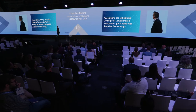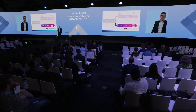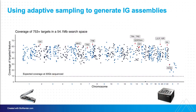Before that we have the non-B cells. With those non-B cells we're able to do some assembling of the Ig loci — a lot of cool work happening with the Oxford Nanopore genomic applications team. We extracted genomic DNA and did adaptive sampling. We have 753 targets, a 54-megabyte search space covering everything in the Ig loci plus other immune genes, giving us about 60X coverage at the Ig loci.